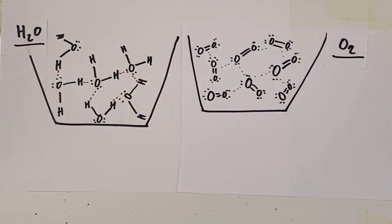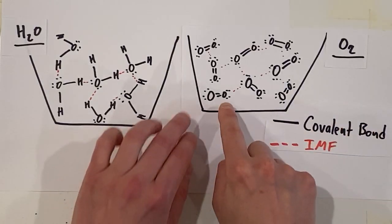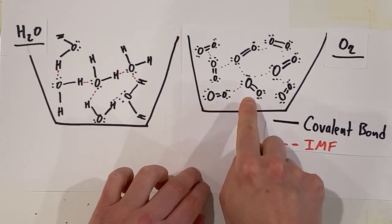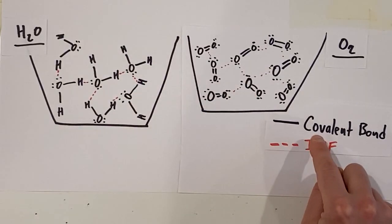You'll notice I've drawn these with the solid black lines representing the covalent bonds. These are the shared pairs of electrons that are holding together the atoms in a single molecule.